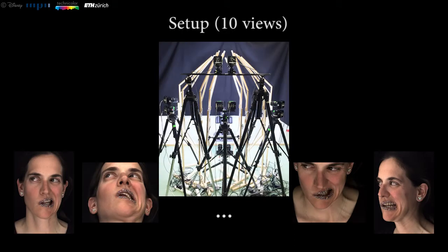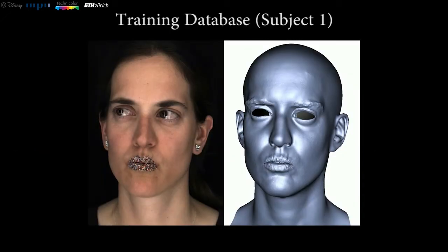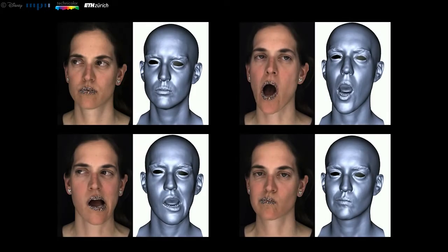A regressor is trained on a set of high-quality scans captured in a multi-view system. We propose a method that leverages marker data — in this case lip tattoos — to reconstruct the lips at high quality. The training set consists of multiple short sequences of four subjects. Here we show a subset of the data.